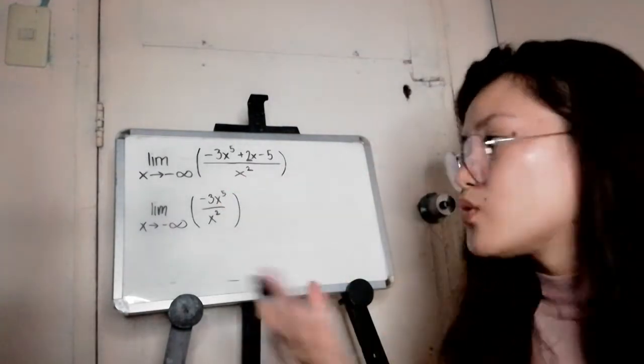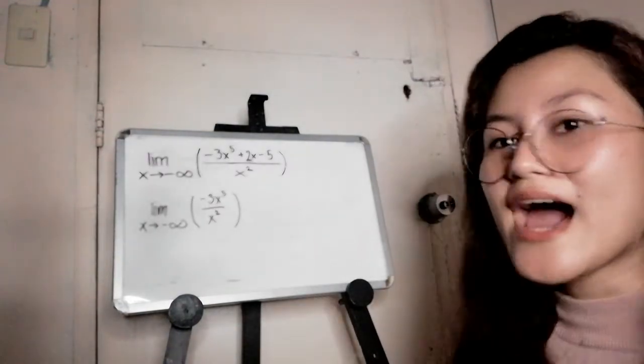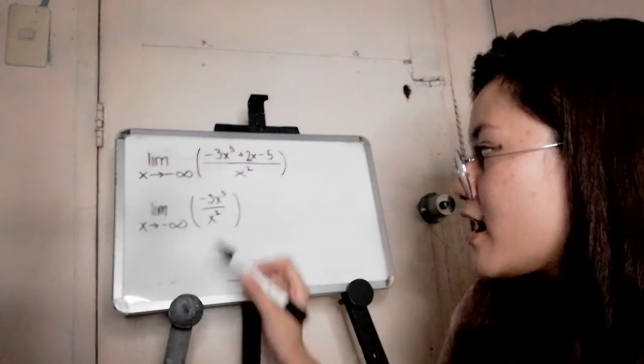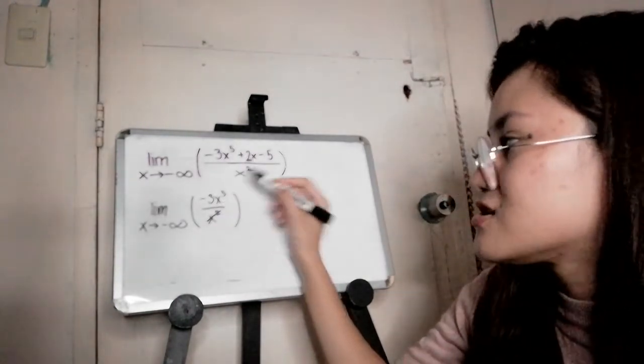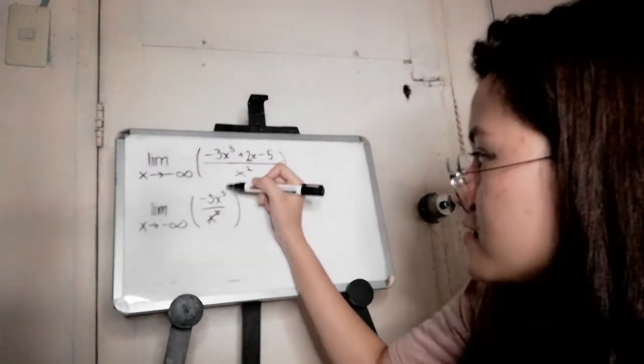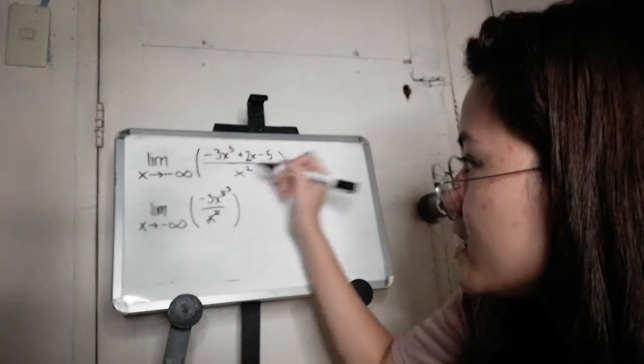So in this case we can reduce something and simplify it. We can actually reduce and cancel this x squared and turn this x to the power of 5 into x to the power of 3. 5 minus 2 is equal to 3, obviously.